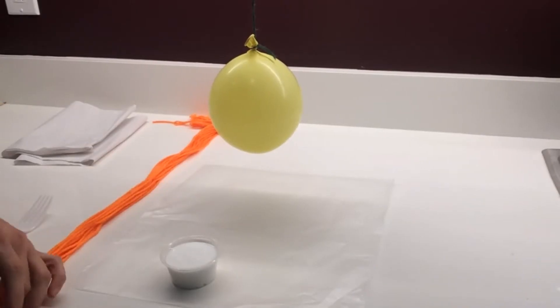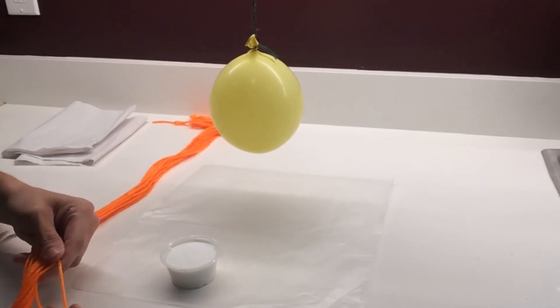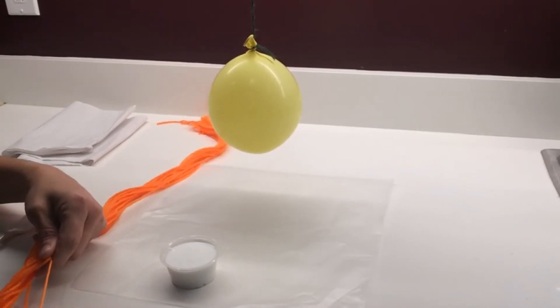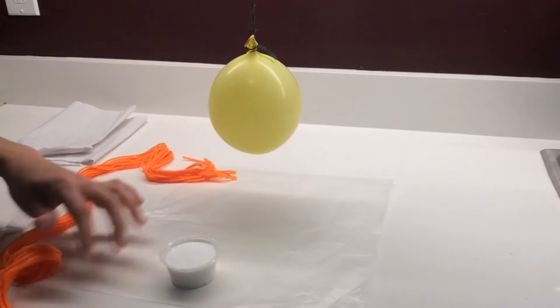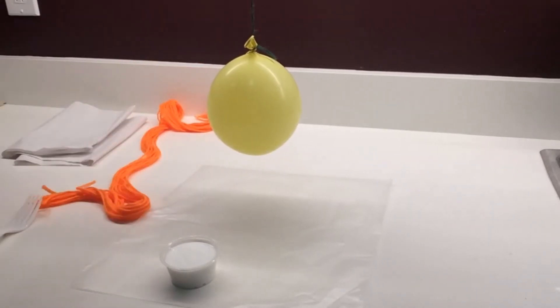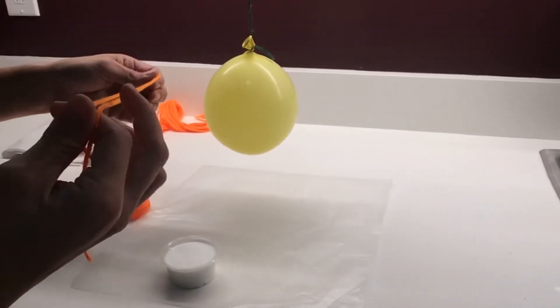Now we're going to attach the yarn to the balloon, one piece at a time. So pull one piece of orange yarn out, and first we're going to soak it in the glue.